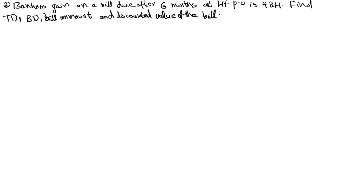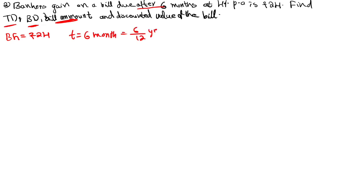Banker's gain on a bill due after 6 months at 4% per annum is rupees 24. Find TD (true discount), BD (banker's discount), bill amount (face value), and discounted value DV. First, write the given data: banker's gain BG is equal to 24 rupees. Due after 6 months means unexpired time t equals 6 months, which is 6/12 equals 0.5 years.